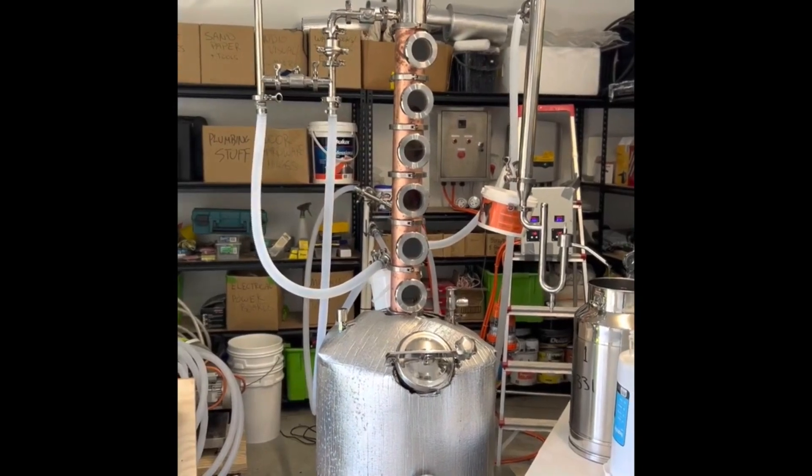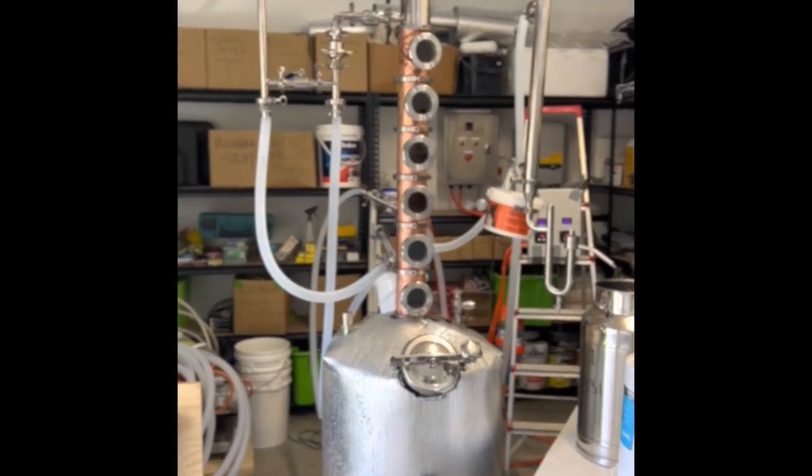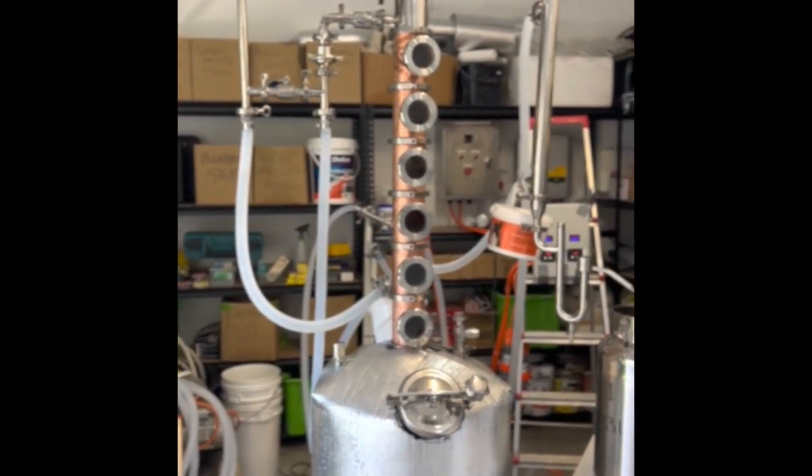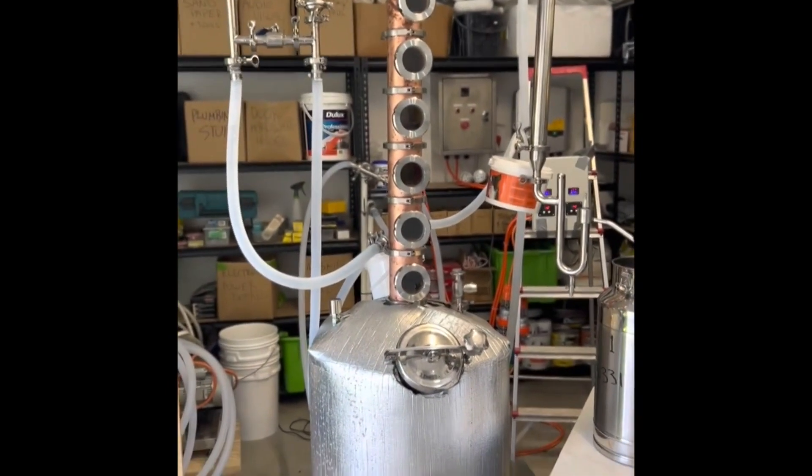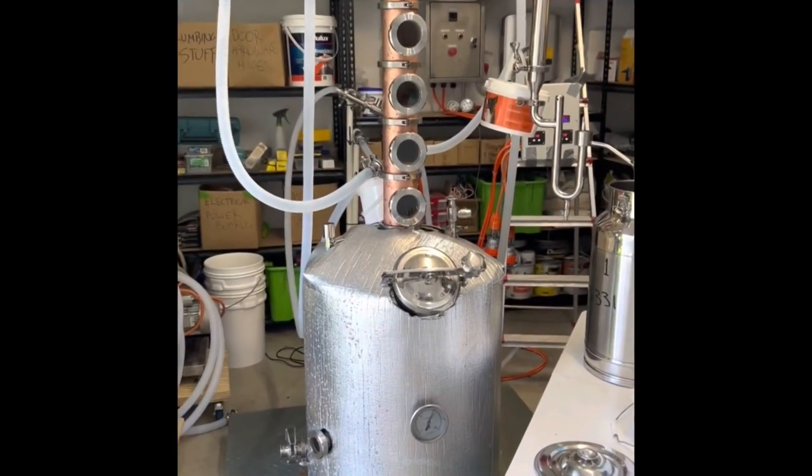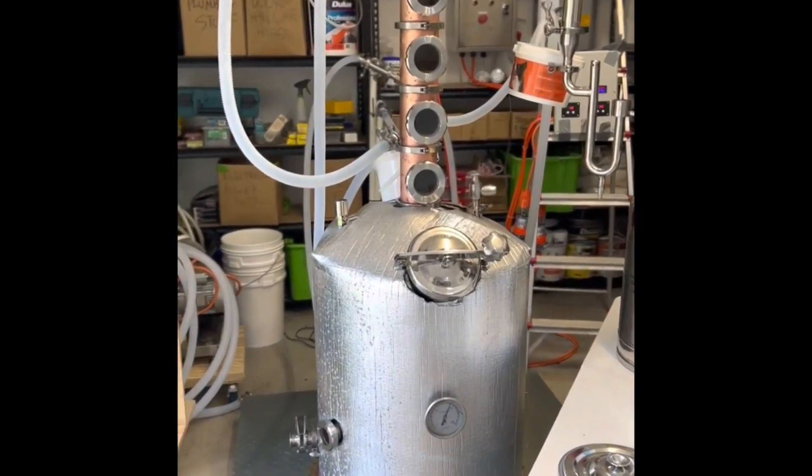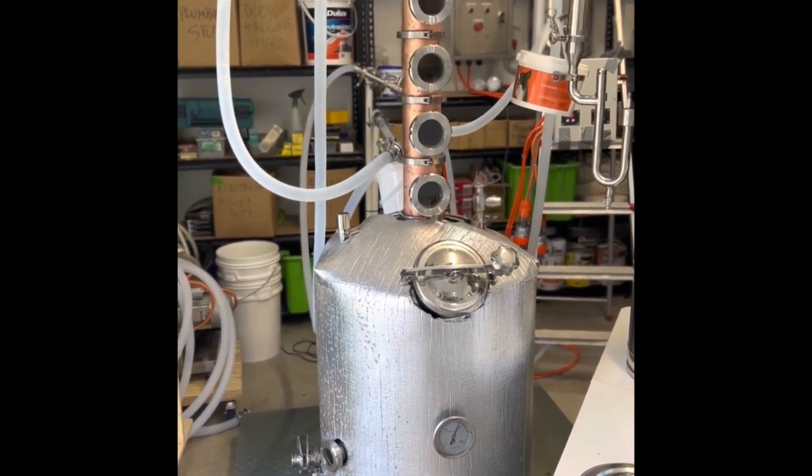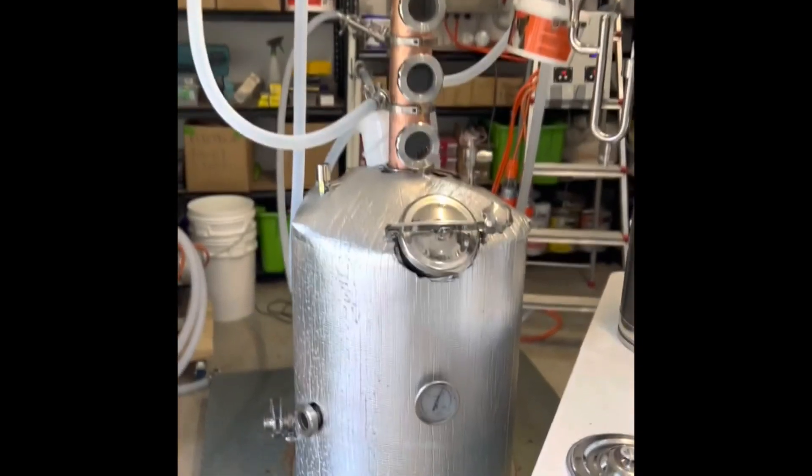This is the still I'm running - it's a six-plate, four-inch reflux, and I'm doing a vodka run today. It has a kettle capacity of 150 litres, which means that I can run 120 litres. I'll just run through the settings as to what I run it at.